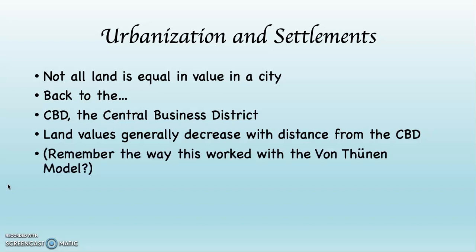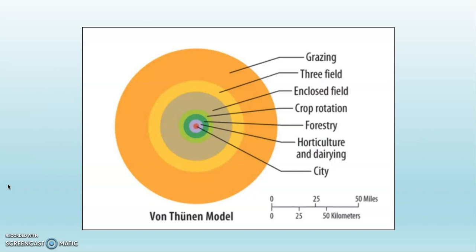Remember the way this worked with the von Thunen model, the agricultural model? The city is in the middle. There was intensive agriculture that surrounded the city in the first rings. That was the most expensive to produce and the most expensive in terms of buying it once you were in the city. As you increased distance away from the city, you had more extensive agricultural products, which means they didn't cost as much to produce. They could use more land, and they didn't cost as much money when sold in the market. This is going to work in a very similar way when we apply it to a city.